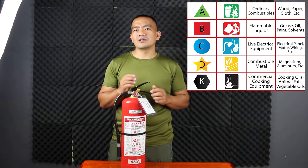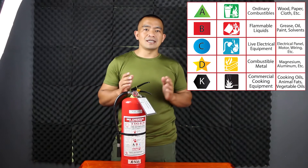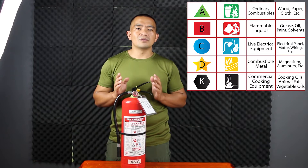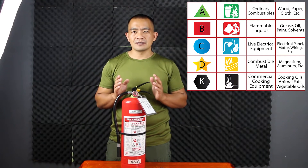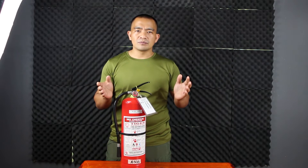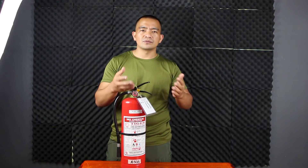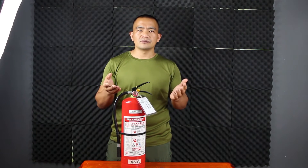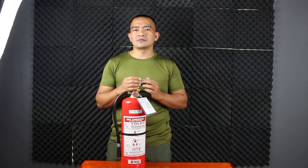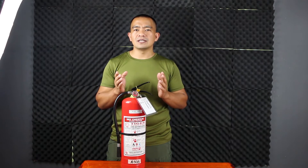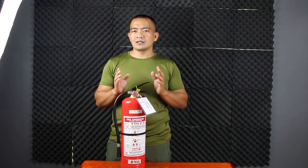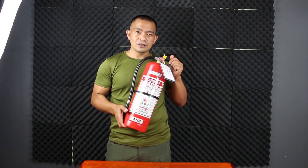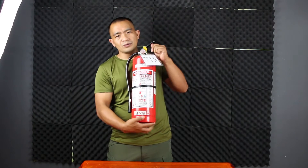Class K is very common in our place because it is also known as kitchen fire — for example, when somebody is cooking and encounters a fire in a frying pan. Now that we know the different classes of fire, we also know the appropriate extinguishing agent to use.